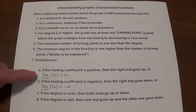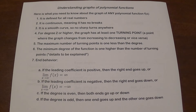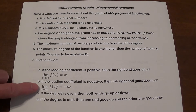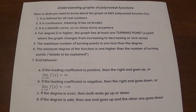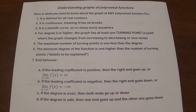Another way to say that: the limit as x approaches infinity is going to be infinity. If the leading coefficient is negative, then the right end goes down, or the limit as x approaches infinity of f(x) is going to be negative infinity. If the degree is even, then both ends will go up or down together. If the degree is odd, then one end goes up and the other end goes down.